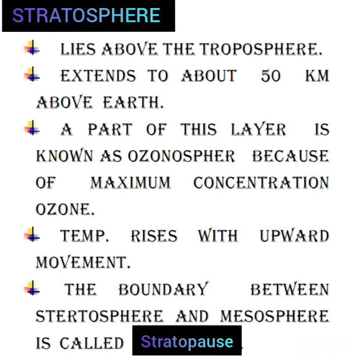Ozone protects Earth by absorbing the harmful ultraviolet rays of the sun. Temperature rises with upward movement through the stratosphere. The boundary between the stratosphere and the mesosphere above is called the stratopause.